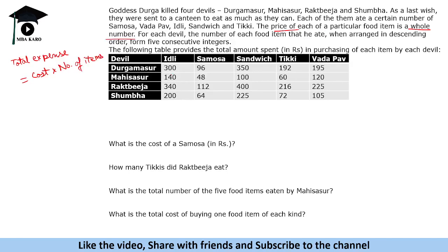For idli, the values are 300, 143, 340, and 200. The price could be 1, 2, 4, 5, 10 — but not 3 since 3 doesn't divide all these numbers. There are multiple possible values, so let's find the HCF of these numbers, which gives the maximum price. The HCF is 20 rupees, so at price 20, quantities are 15, 7, 17, and 10 idlis. Maximum price is 20; it could also be 10 giving quantities 30, 14, 34, and 20.